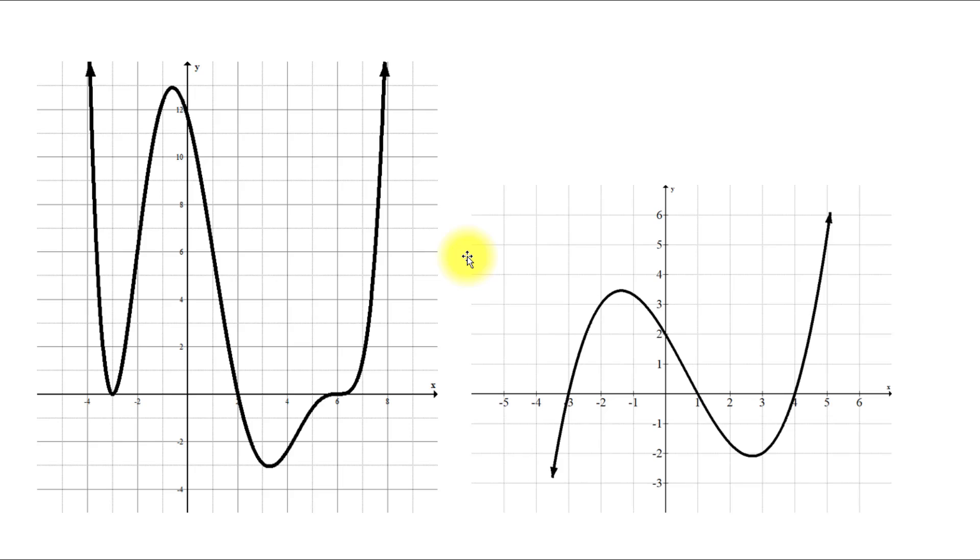We already observed and talked about how graphs of polynomial functions have turning points. That's where the graph changes its direction from increasing to decreasing or vice versa.